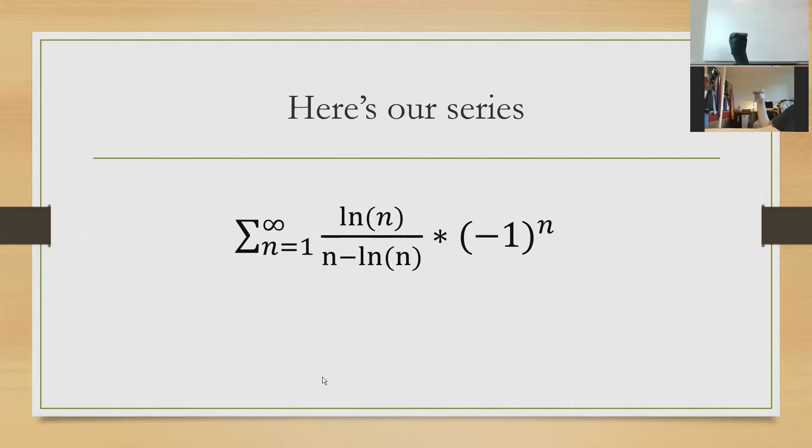Well here's what we're starting with. We have the sum from 1 to infinity of natural log of n over n minus natural log of n, times negative 1 to the n. So, what's the first thing that sticks out to me? Well, obviously the negative 1 to the n — this tells me that there's going to be something going on with an alternating series.